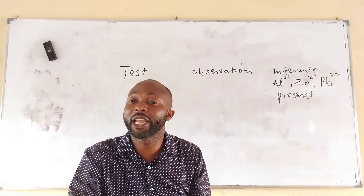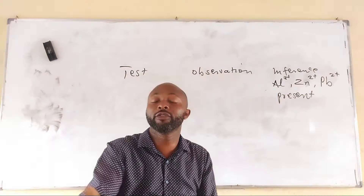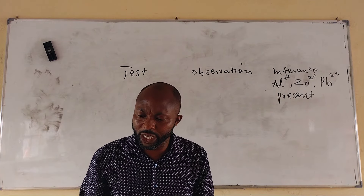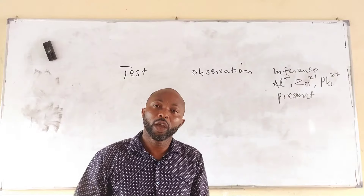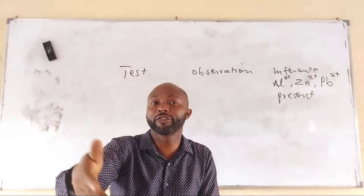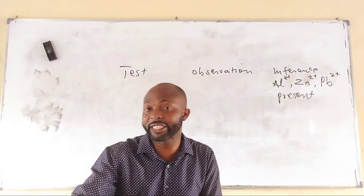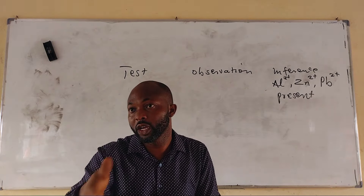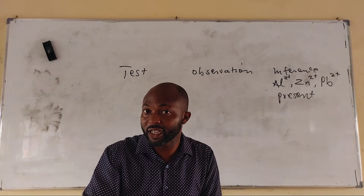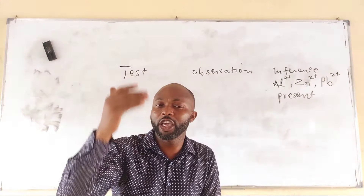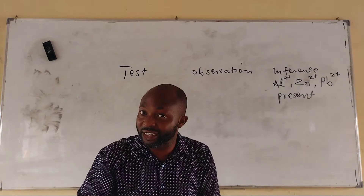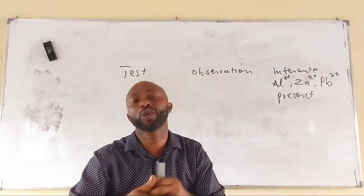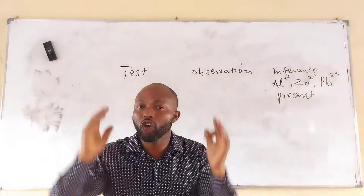For the iodide ion, we add silver nitrate and it gives us a yellow precipitate. We add dilute trioxonitrate(V) acid — even in excess — and the yellow precipitate remains insoluble. We further add aqueous ammonia in excess; the yellow precipitate remains insoluble in excess of ammonia solution. We know that iodide is confirmed.